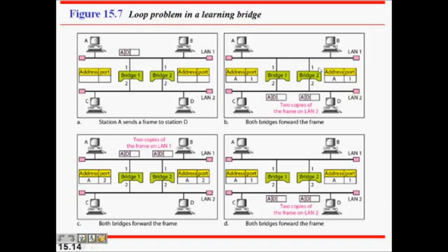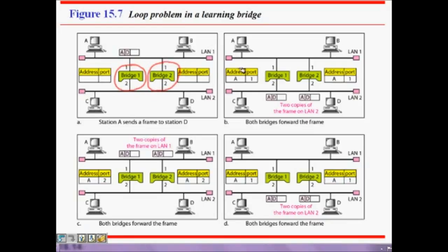But there is a problem. For reliability and fault tolerance, administrators often use two or more bridges, but that causes a loop. For example, here LAN 1 and LAN 2 are connected by bridge 1 and bridge 2. The intent is that even if one bridge fails, frames should still be able to reach LAN 2.